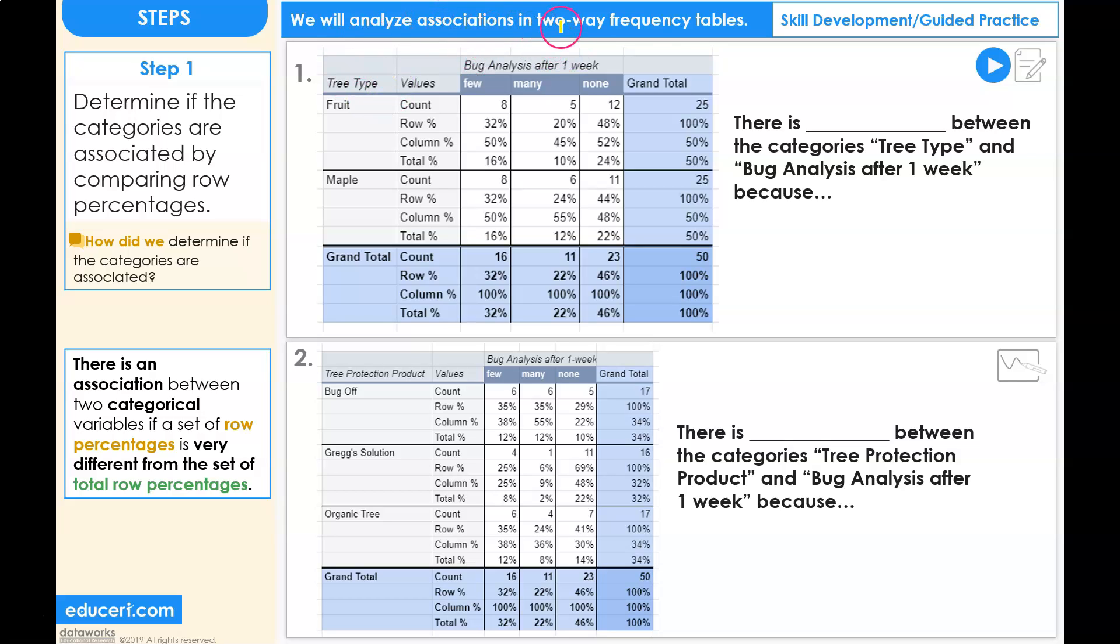Let's analyze associations in two-way frequency tables. Problem number one. We have a two-way frequency table with the two categorical variables of tree type and bug analysis after one week.